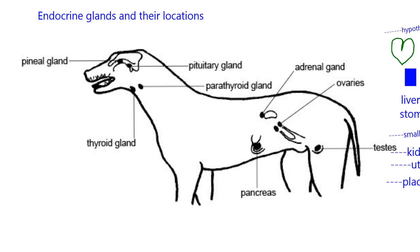Next, we have the pituitary gland, which is at the base of the brain. This drawing doesn't show the brain, but it shows the relative location. The pituitary gland has two parts: the anterior pituitary gland and the posterior pituitary gland — so that's two different glands that we talk about.